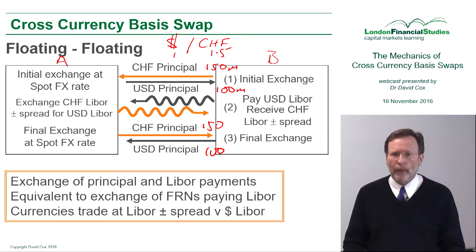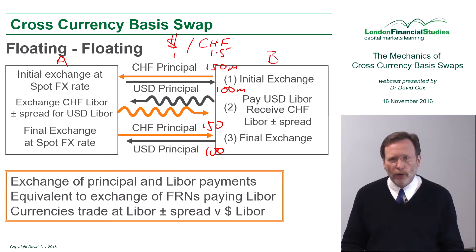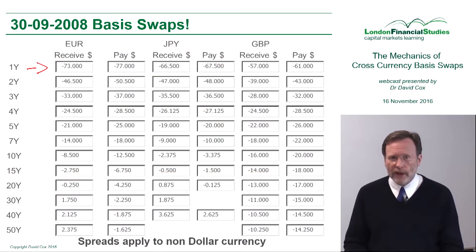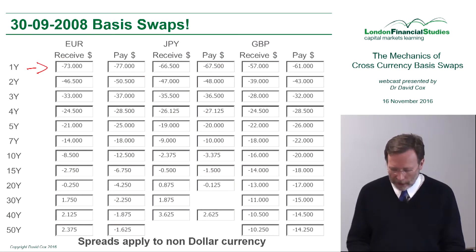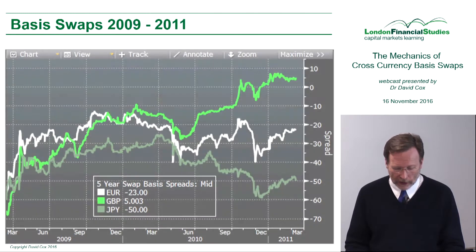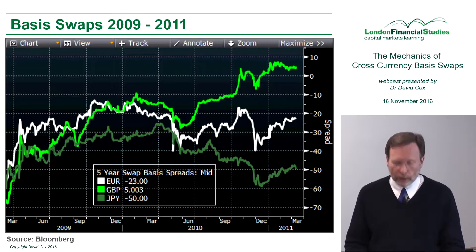Against Swiss franc LIBOR, and what the level ought to be. In order to understand the spread giving us this hugely negative basis swap spread, as time rolled on you can see that the basis swap spreads evolved.